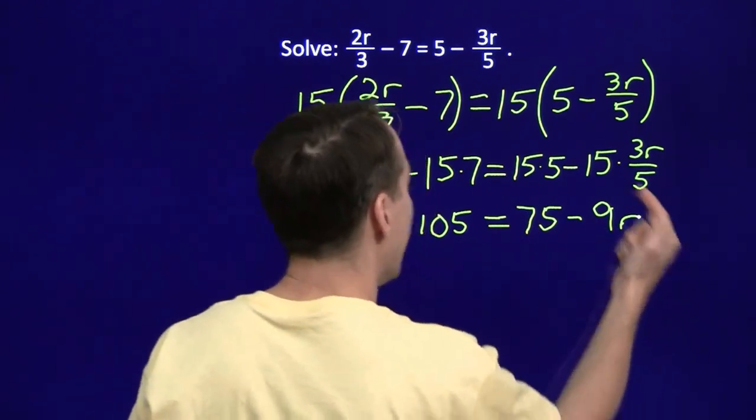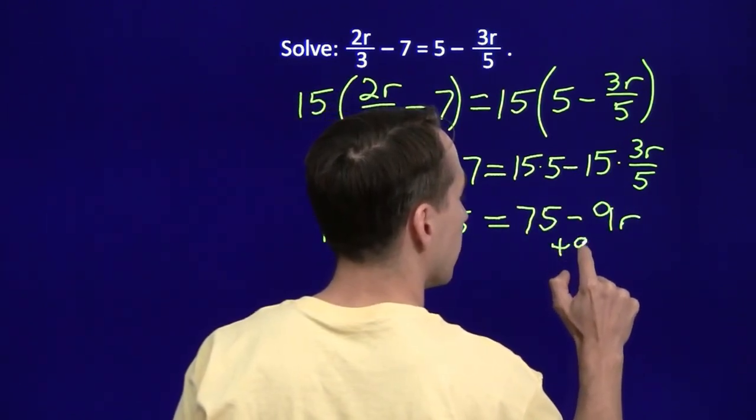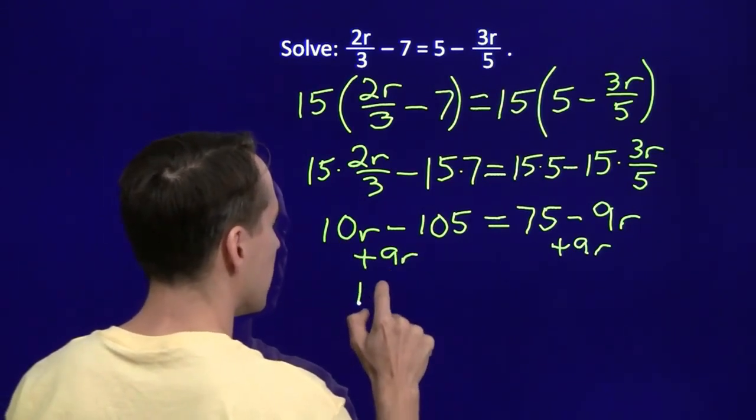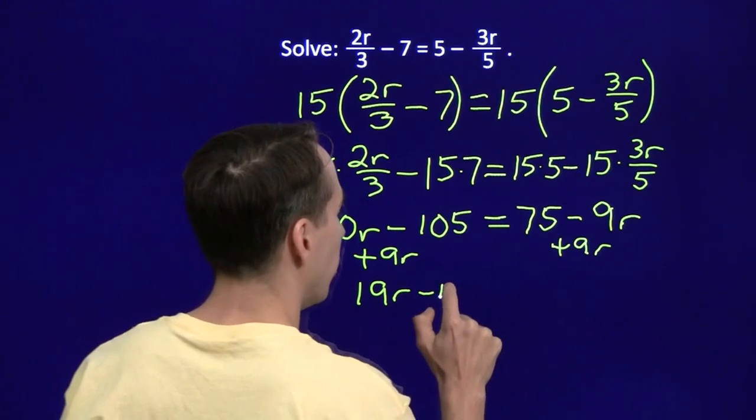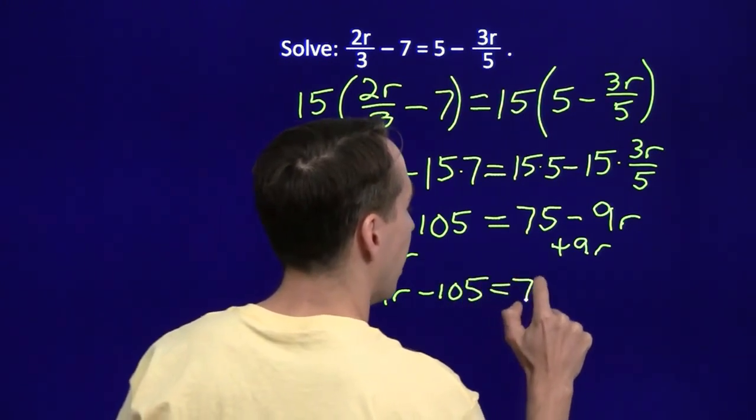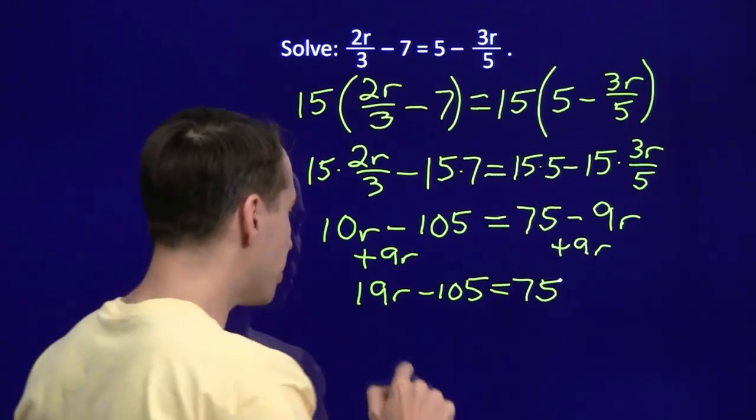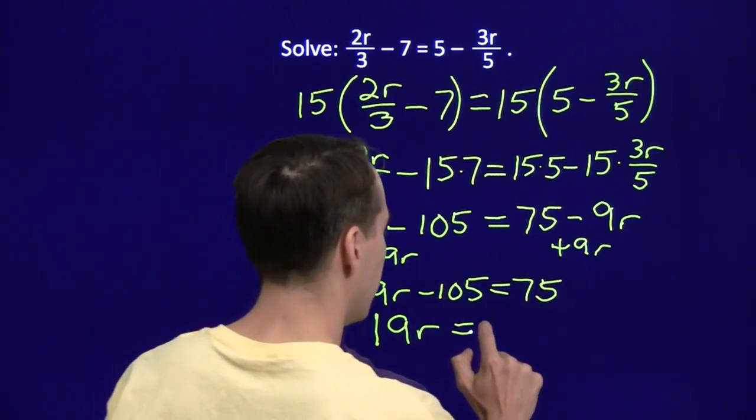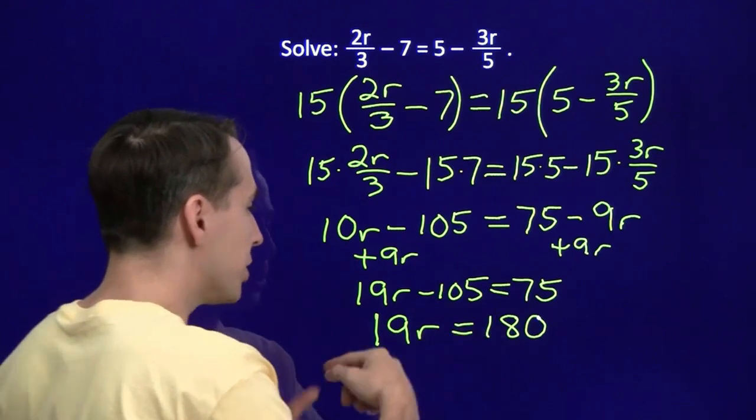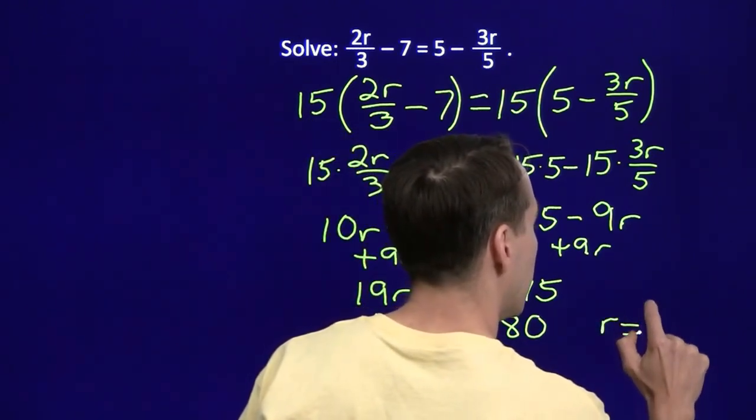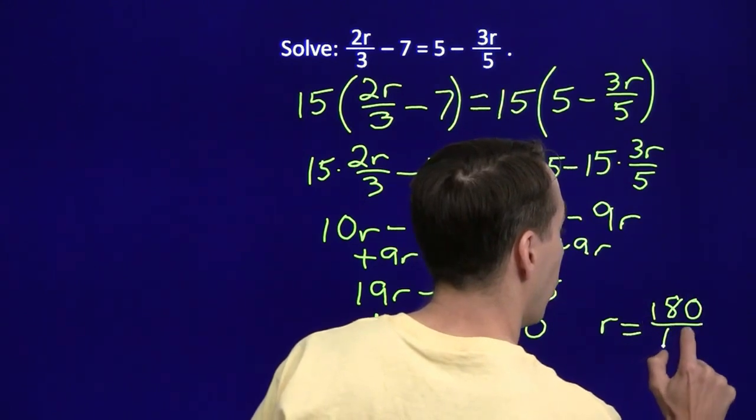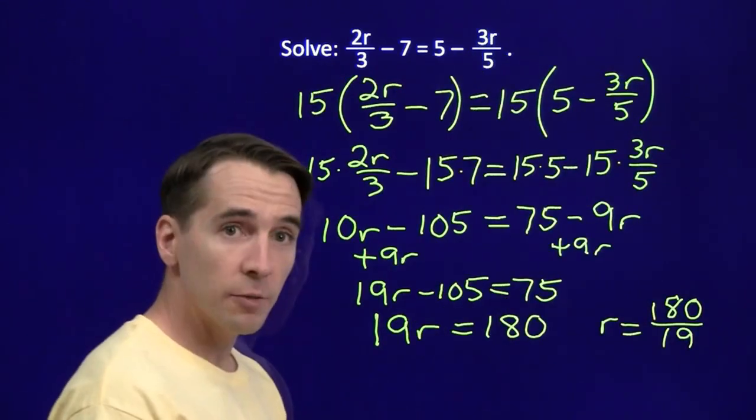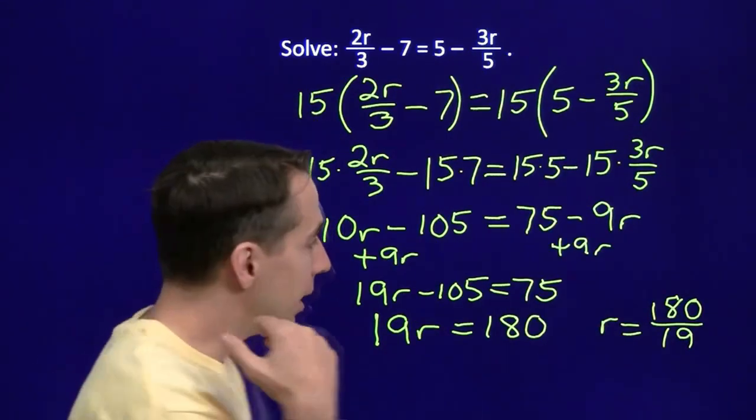Now, this is a problem we know how to deal with. We add the 9r. Add 9r to both sides to get all the variable terms on one side. And we have 10r plus 9r gives us 19r minus 105 equals 75. Now, if we add 105 to both sides, we get 19r equals 75 plus 105 equals 180. And then we divide both sides by 19. And we get r equals 180 over 19. And that's the same answer as we had the first time. Same answer. We did the problem two different ways. We got the same answer, so we must be right. And we're done.